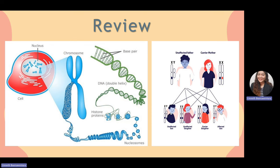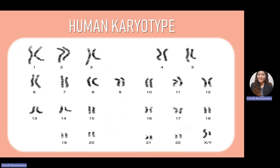First of all, we all know that chromosomes are thread-like structures found in the nucleus of plant and animal cells. Chromosomes are made up of DNA — deoxyribonucleic acid — known as the blueprint of life. All characteristics from mother and father are contained within the DNA, so all traits can be passed down to offspring.